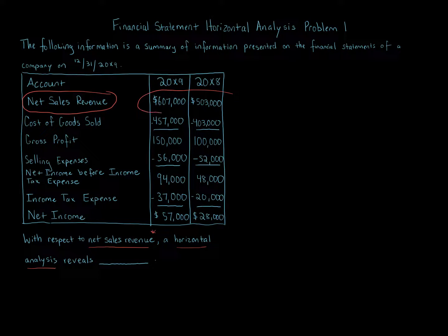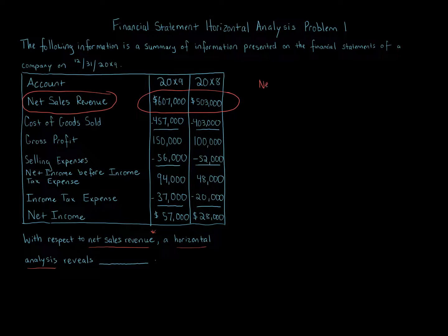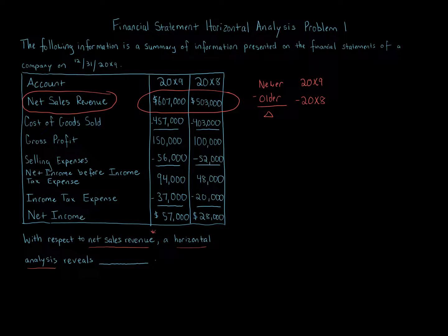Each item on the most recent statements is compared with the same item on one or more earlier statements, looking at the amount of increase or decrease as well as a percentage. The way we do this: we take the newer year minus the older year to get our change in amount. Here the newer year is 20x9 minus the 20x8 amount.